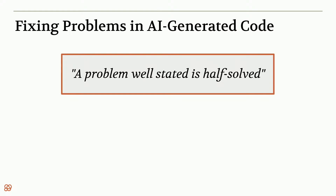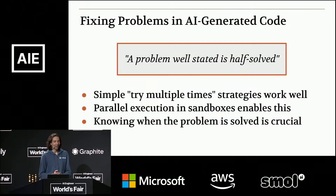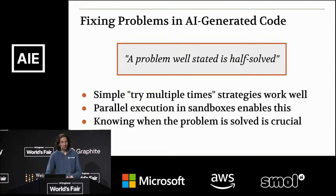After you've found issues, you have to fix them. Very little of this talk is about fixing because it ends up being a lot easier for the systems to fix issues than you'd expect. As the quote goes, a problem well stated is half solved. If you really understand what went wrong, it's much easier to solve it. Even just trying multiple times — 100 times with a different agent — actually works quite well. One of the things that enables this is good sandboxing: if agents can run safely, you can run an almost unlimited number in parallel, and if any one of them succeeds, you use that solution.